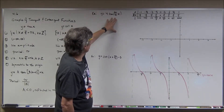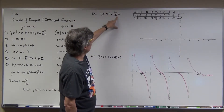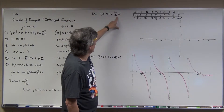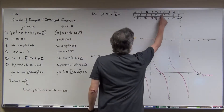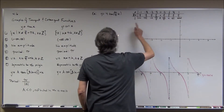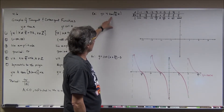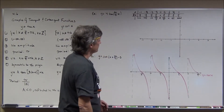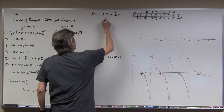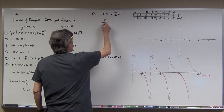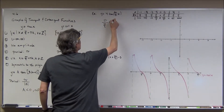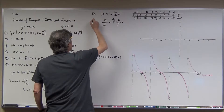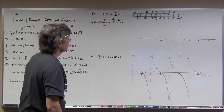For the first example, whenever I have a change in period I like to pick x-values such that when I multiply them by b — which is π/2 — I get values I know from the unit circle: multiples of π/6 and π/4. The period of the parent tangent function is π, so dividing by |π/2| gives π times (2/π), which equals 2. So the new period is 2.